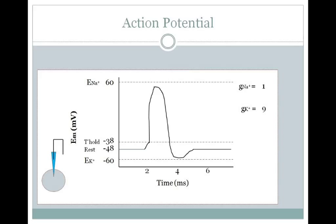Action potentials have a threshold at which the all-or-none action potential will start. Usually that threshold is slightly more depolarized than rest — around 10 millivolts more depolarized. So in our case, let's say our threshold is minus 38 millivolts. If the membrane gets depolarized to minus 38 millivolts, you will get an action potential. Later in this video, we're going to talk about why there is a threshold and how the ion channels determine it.